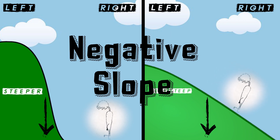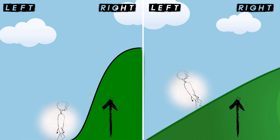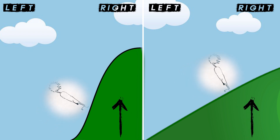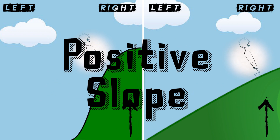Now, what if they are going up the hill, like in this animation? This would mean that it would be increasing, or a positive slope.